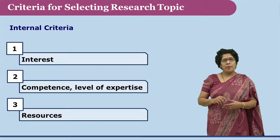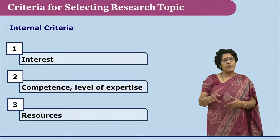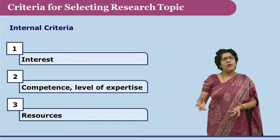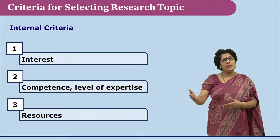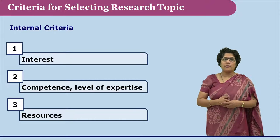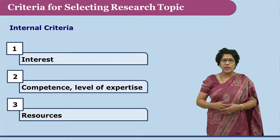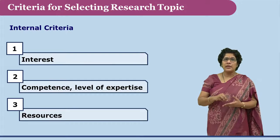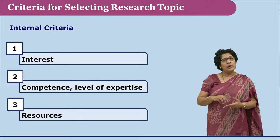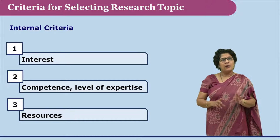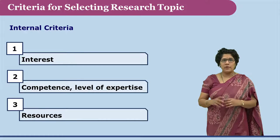The third internal factor is the resources available to the researcher. The researcher might have reach to a particular group as a sample, making data collection from them possible. But at times it is not possible to even reach the sample. So the researcher needs to consider whether there are enough resources to conduct the research and reach that sample.